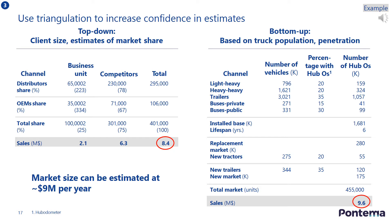The final stage in market sizing is to use triangulation to increase your confidence in the estimates. Triangulation seeks to examine the consistency and accuracy of your different data sources. So take time to review your approaches and consider where you have the greatest confidence. In the example on the slide, because there is high confidence in both approaches, the market size can be estimated to be the midpoint between the two approaches.